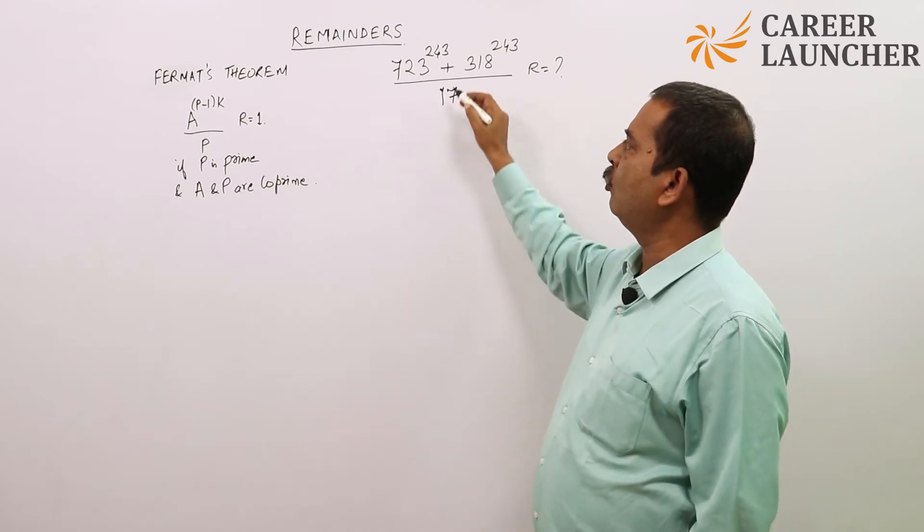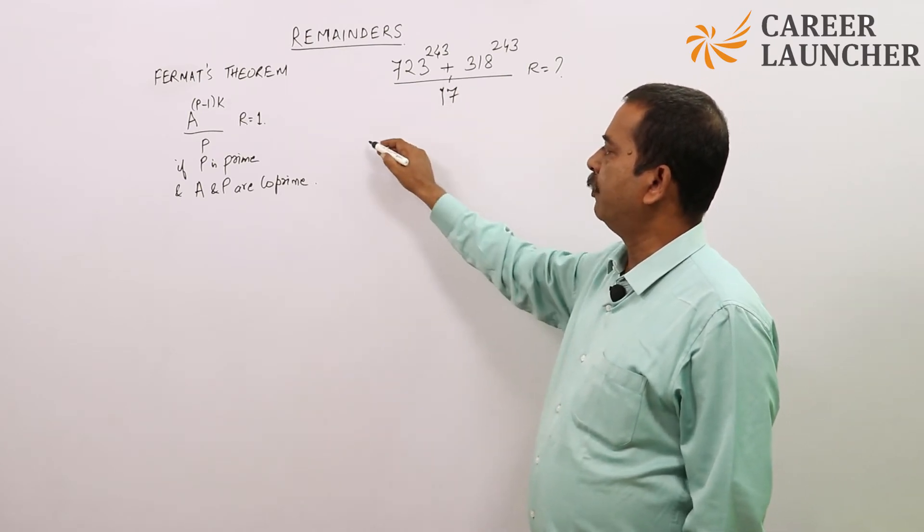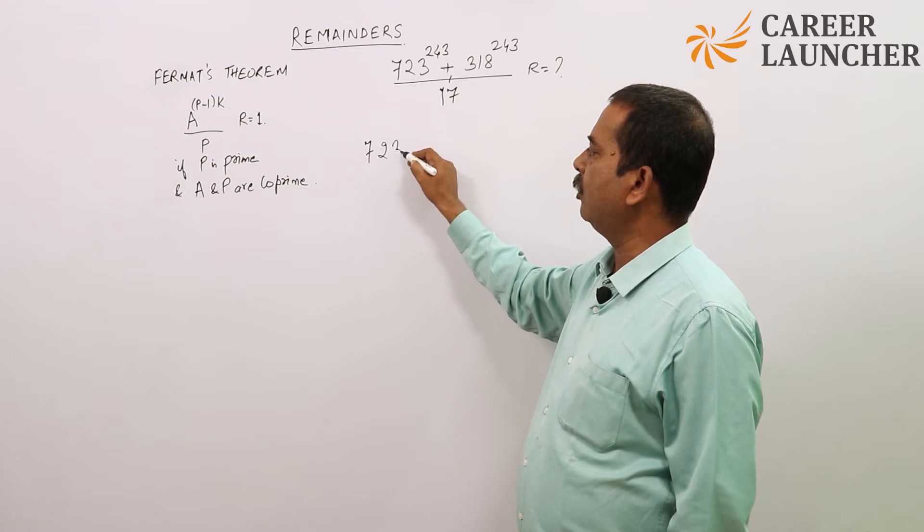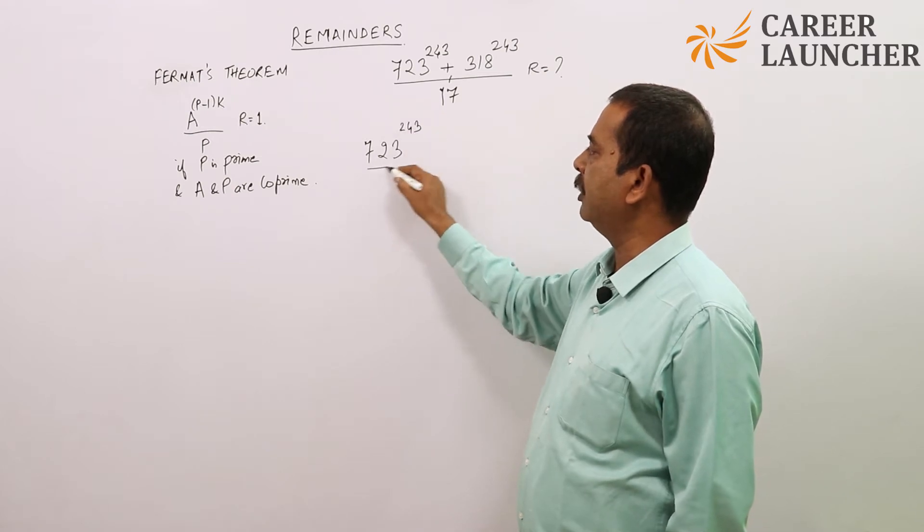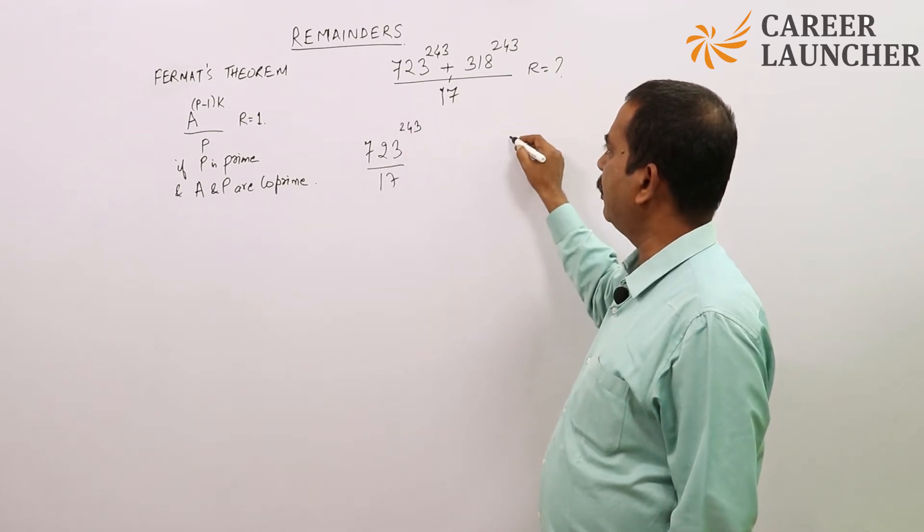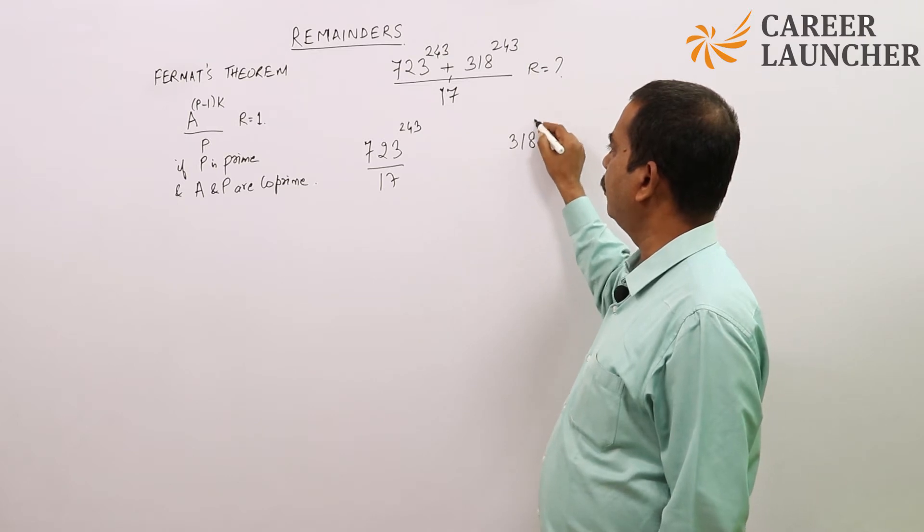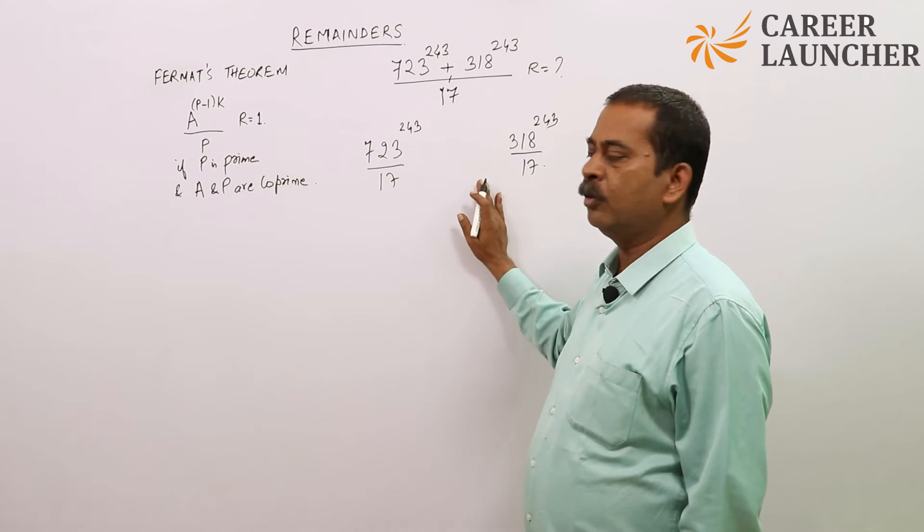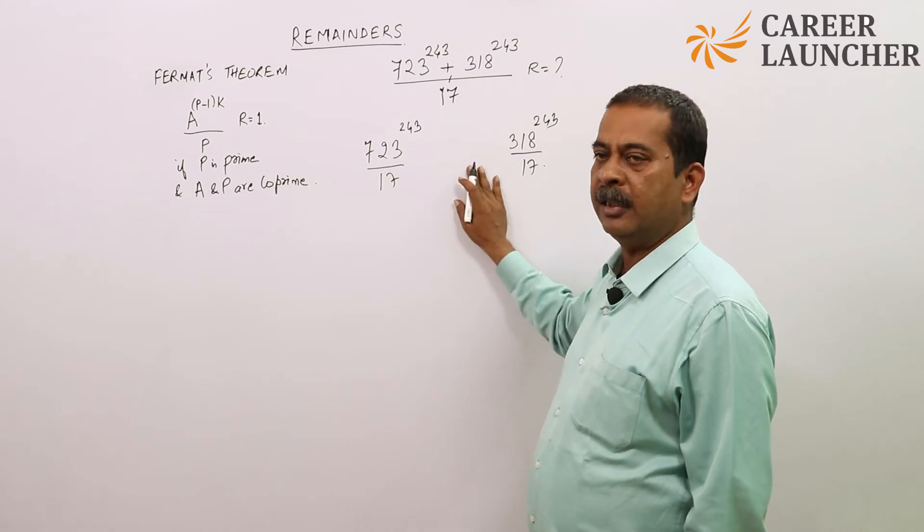We'll break it into two parts. First part becomes 723 to the power 243 divided by 17, and the second part becomes 318 to the power 243 divided by 17. I'll find the remainders of both and then add them to get the answer.